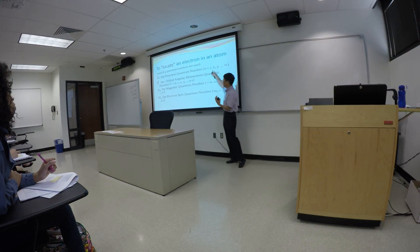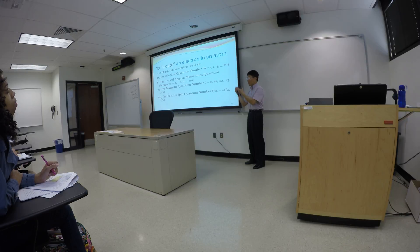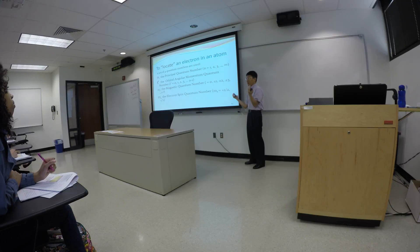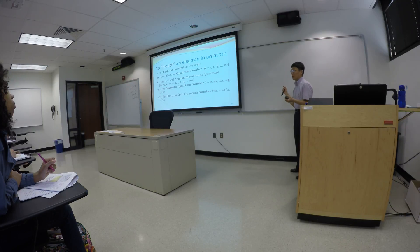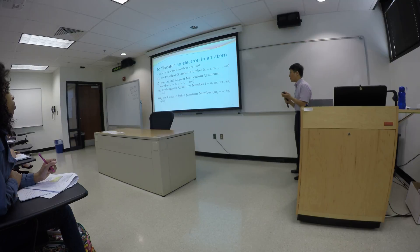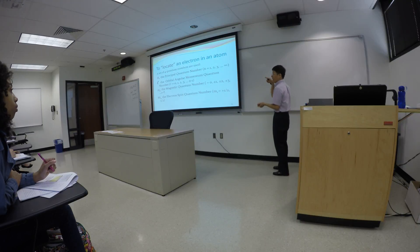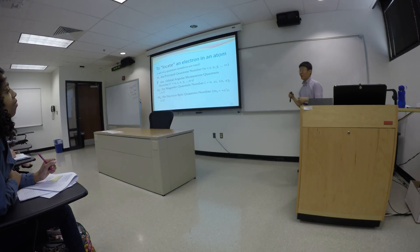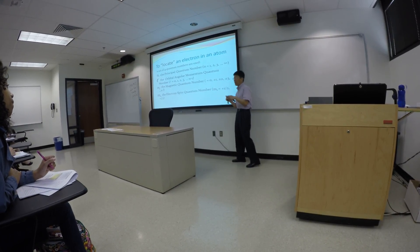The first three quantum numbers determine where the electron is. The last quantum number differentiates the two electrons that are in the same orbital — one is going to be positive one-half and the other has to be negative. Positive refers to counterclockwise spinning and negative to clockwise spinning. These four quantum numbers describe a particular electron.